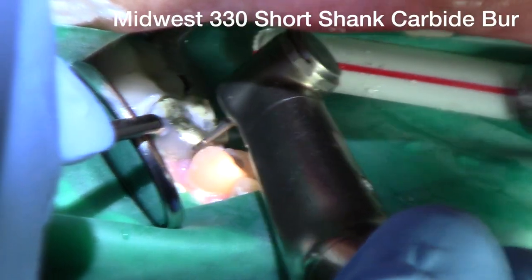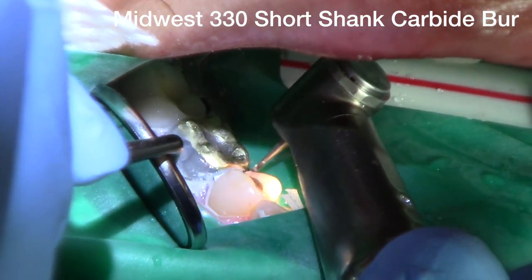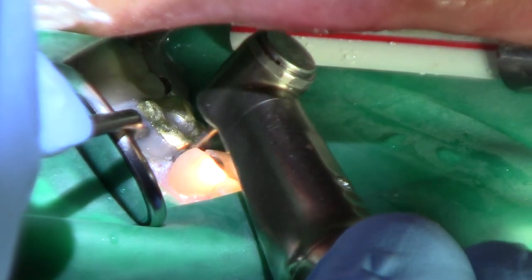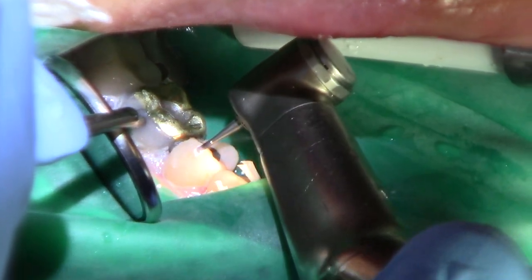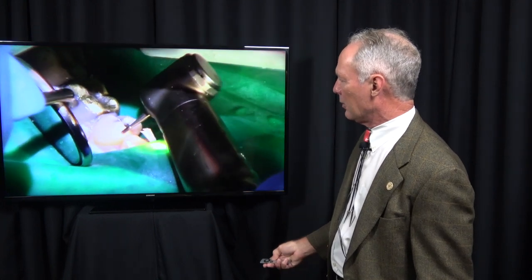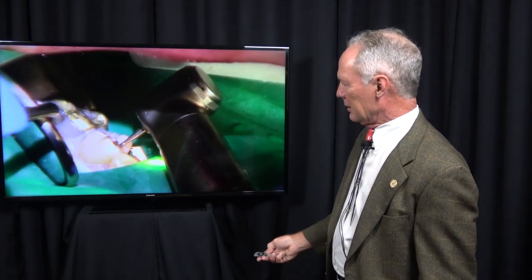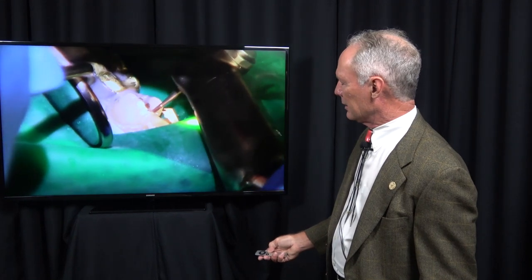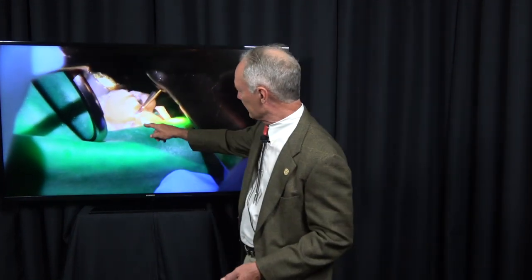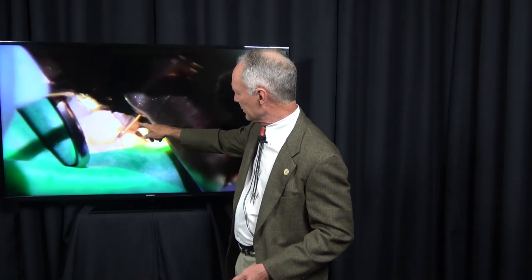This is a 330 short shank carbide burr and I'm prepping interproximally. I'm keeping the preparation into the bicuspid. This burr is two millimeters long and so I want about a millimeter and a half of occlusal reduction. I'm placing most of the burr into the tooth as a guide for occlusal reduction.